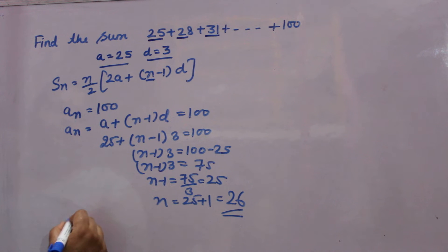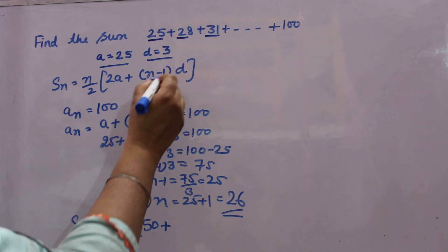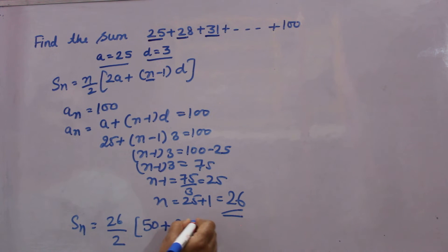Now you can substitute in the formula. 26 over 2 into 2 into A. A is 25, 2 into 25 is 50, plus N is 26, N minus 1, that is 25 into D is 3. 26 over 2, that is 13. 50 plus 25 into 3 is 75.